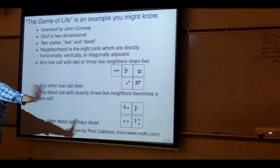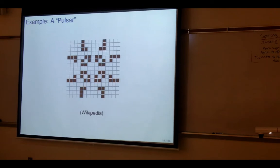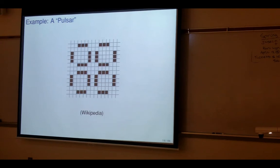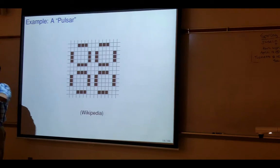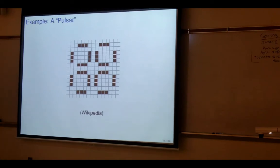I don't think this was inspired by any particular biological model — they just experimented with the rules until they got something interesting. Any other dead cell not surrounded by exactly three live neighbors stays unoccupied. This seems very simple, but it creates some very interesting and complex patterns. For example, a 'pulsar' — if you start like this it evolves through states and gets back to where it started after a few steps. There are some patterns that spit off projectiles in directions, and some that just travel across the board.